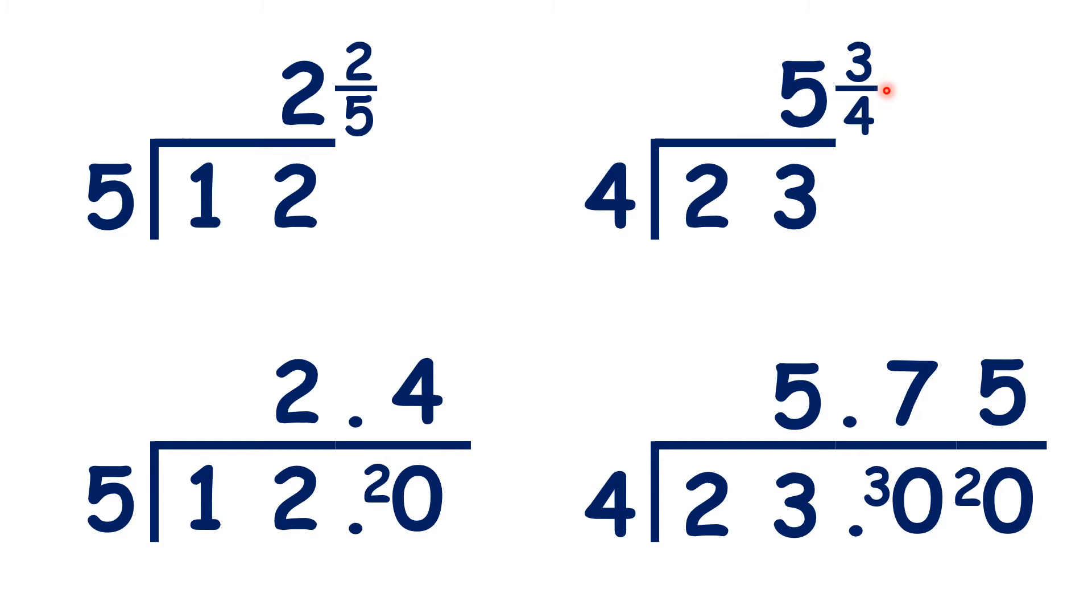Notice, as a fraction, our remainder was 3 quarters. 3 quarters, and you might know that 3 quarters is equivalent to 75 hundredths, or 0.75. So that's why as a decimal, we can express our remainder as 0.75.